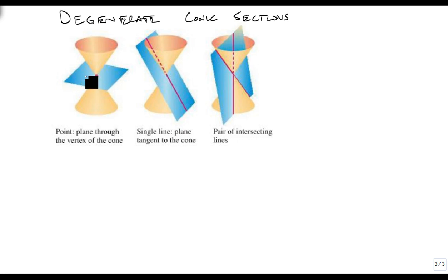So suppose we have a plane going right through the center of the double cone. That's a point, and it's a degenerate conic section because it's just a point. Or we could make the plane be perfectly along the line so it forms a line. So a linear equation in this sense is a degenerate conic section.